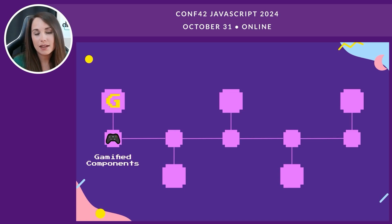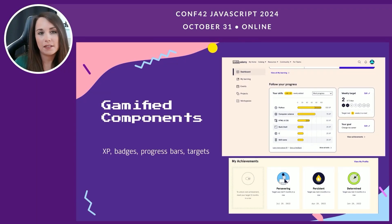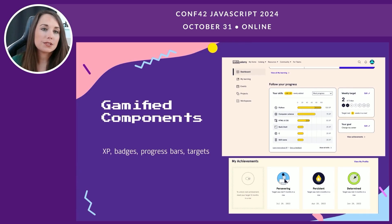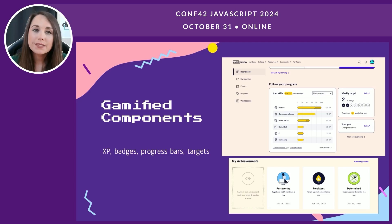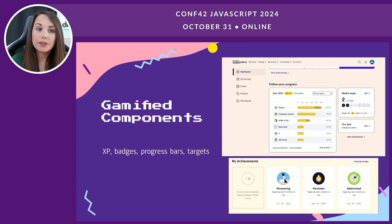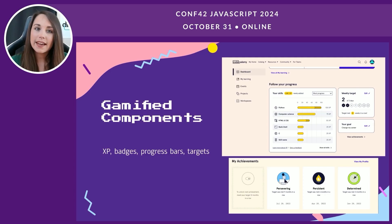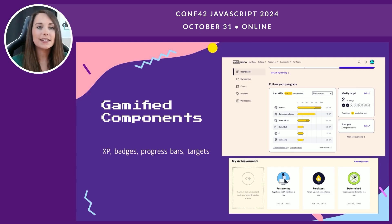Let's look at how this concept comes to life in an app like Codecademy. Codecademy uses several gamified elements to drive user engagement and motivation. XP points reward users for completing lessons, providing instant feedback and incentivizing progress. Badges mark milestones, visually representing achievements, while progress bars track advancement through courses. Additionally, weekly target trackers encourage consistency by setting measurable goals using visual cues to help users stay focused. These elements are nicely integrated to enhance the learning experience and maintain user motivation.